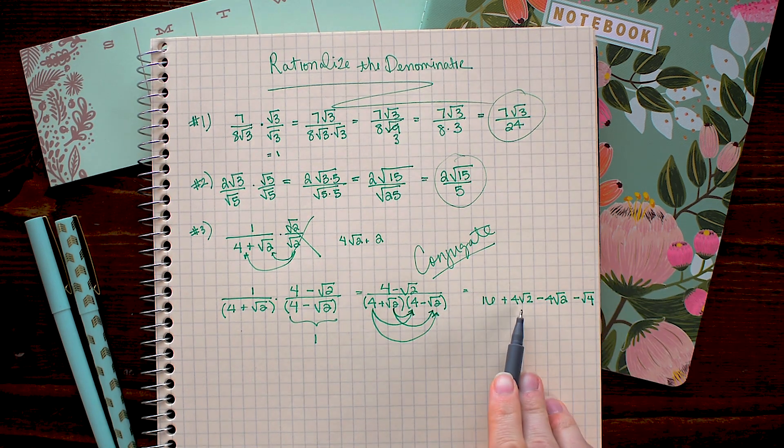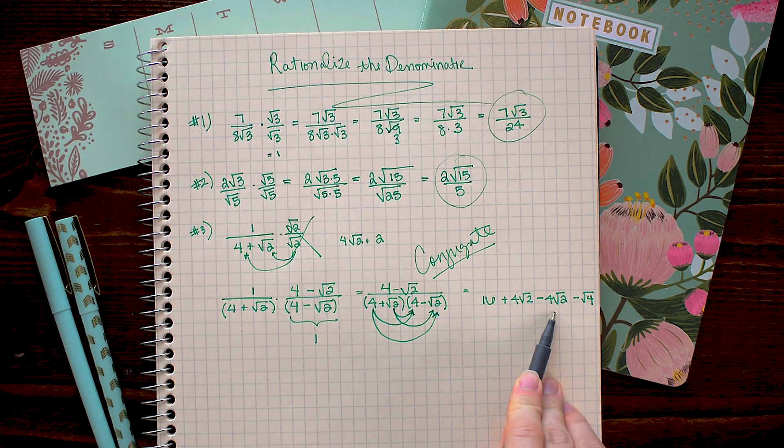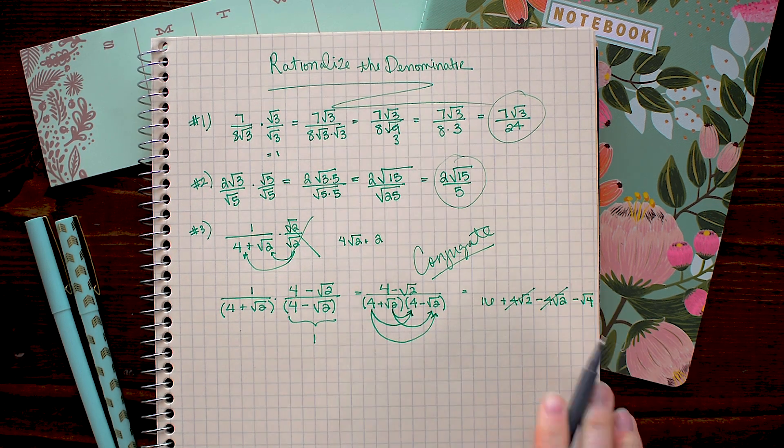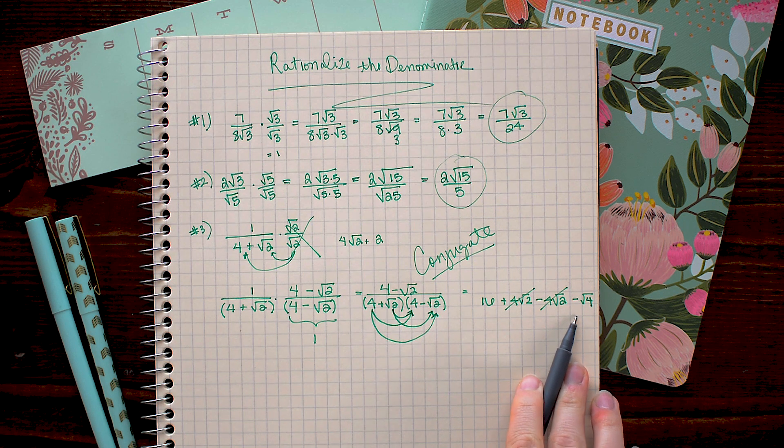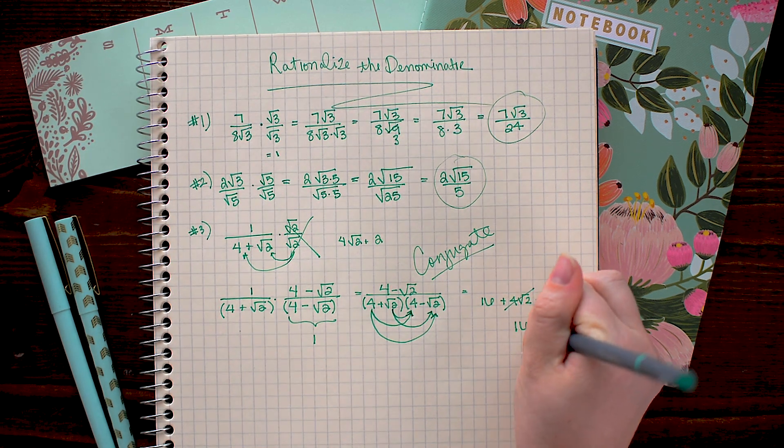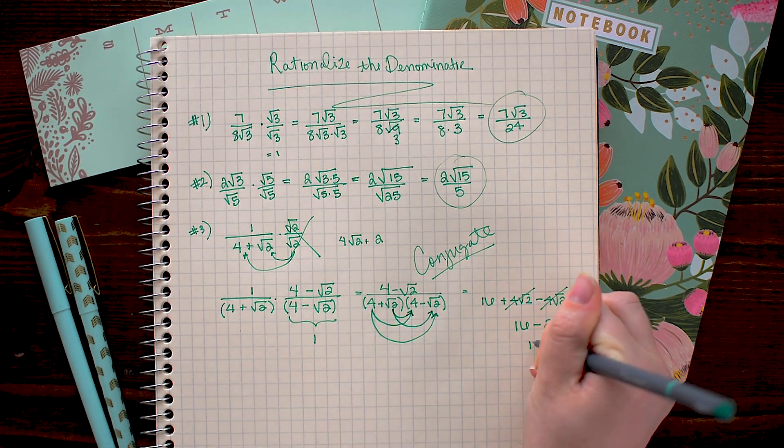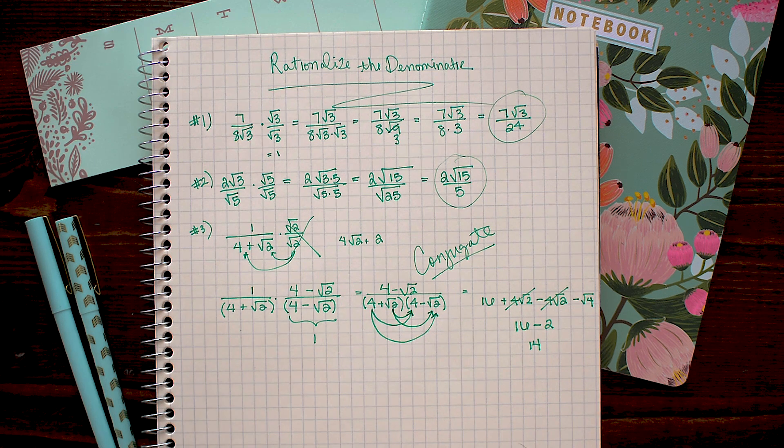Now our positive 4 square root 2 and negative 4 square root 2 cancel each other out. And minus square root 4 is simply minus 2. So the denominator becomes 16 minus 2, which is 14. I'm going to go ahead and rewrite the answer now.